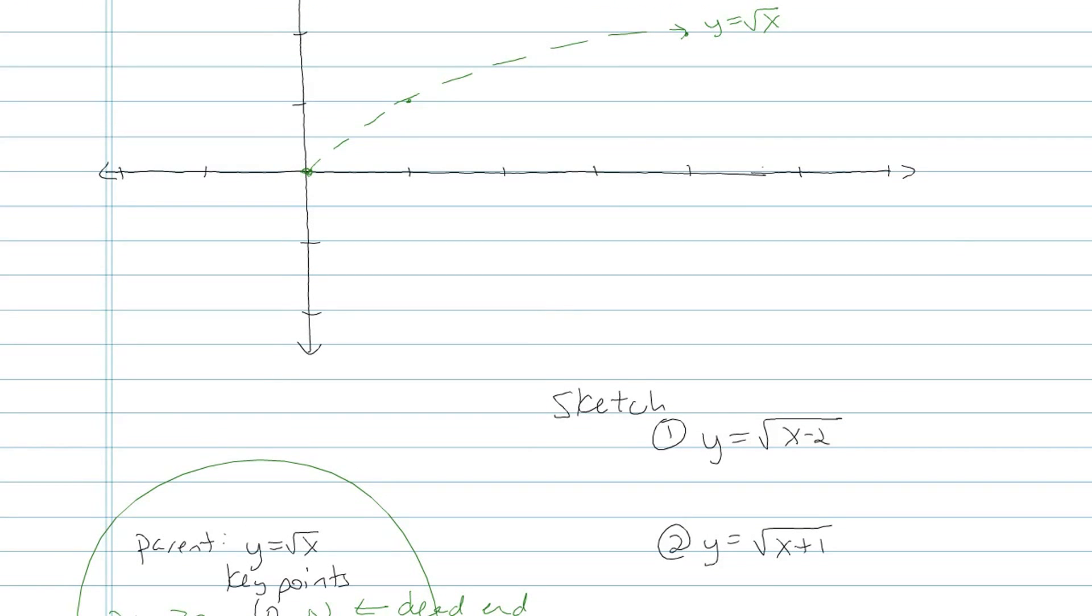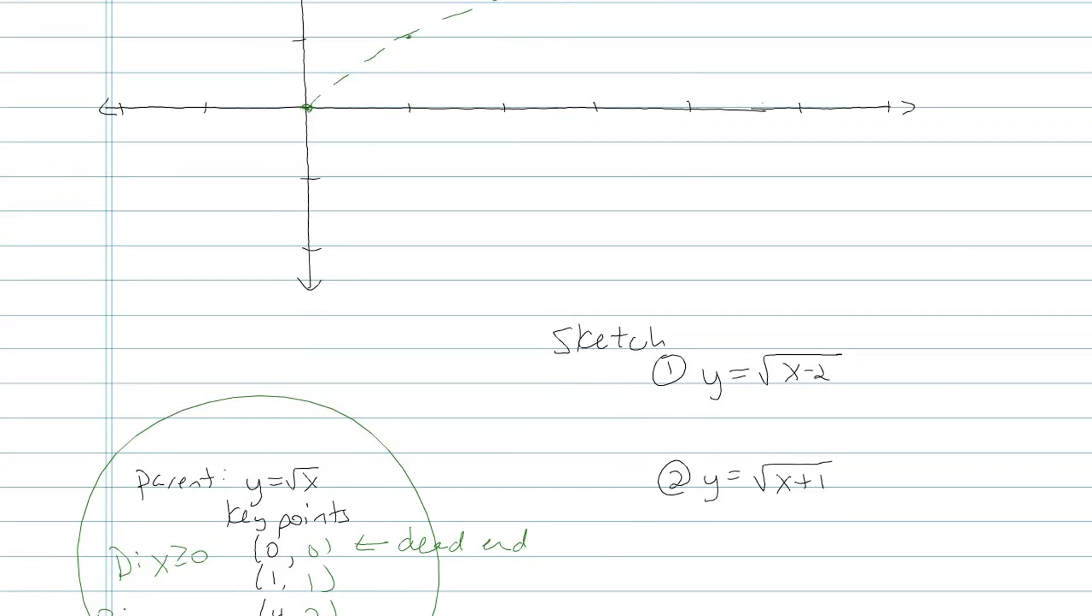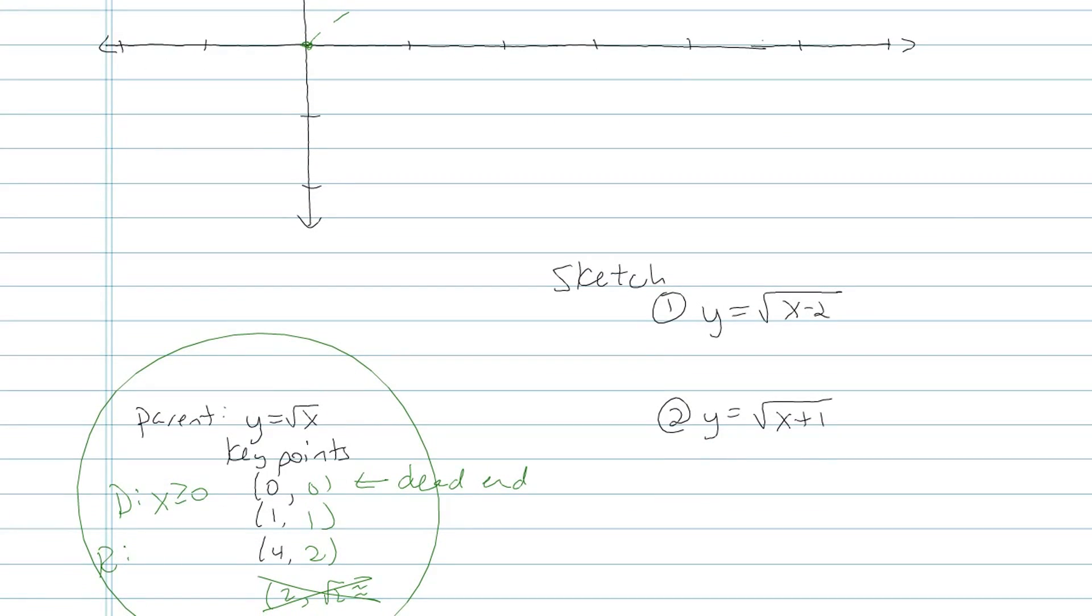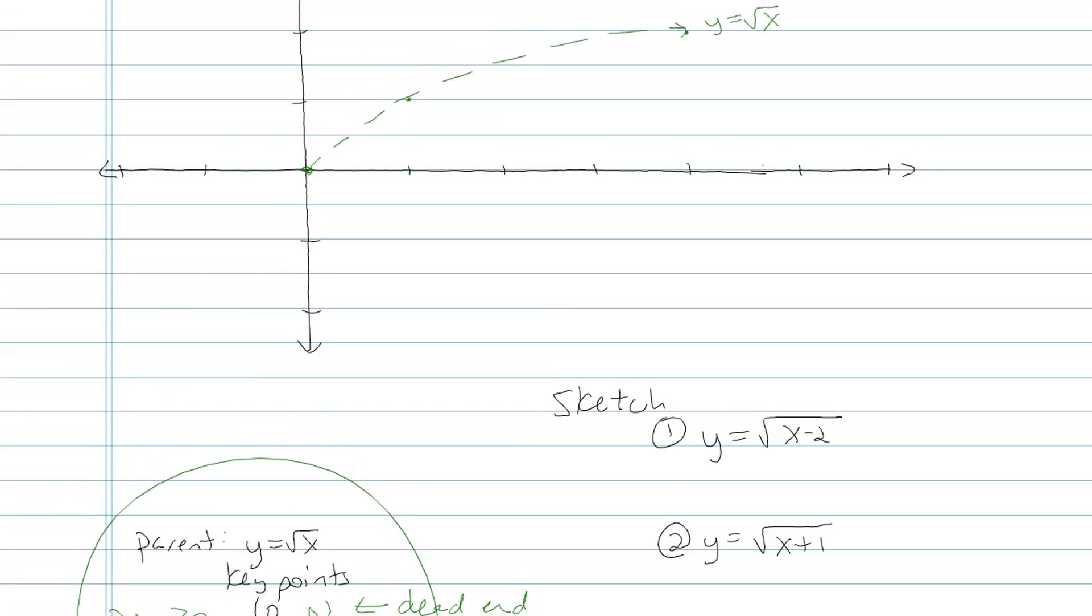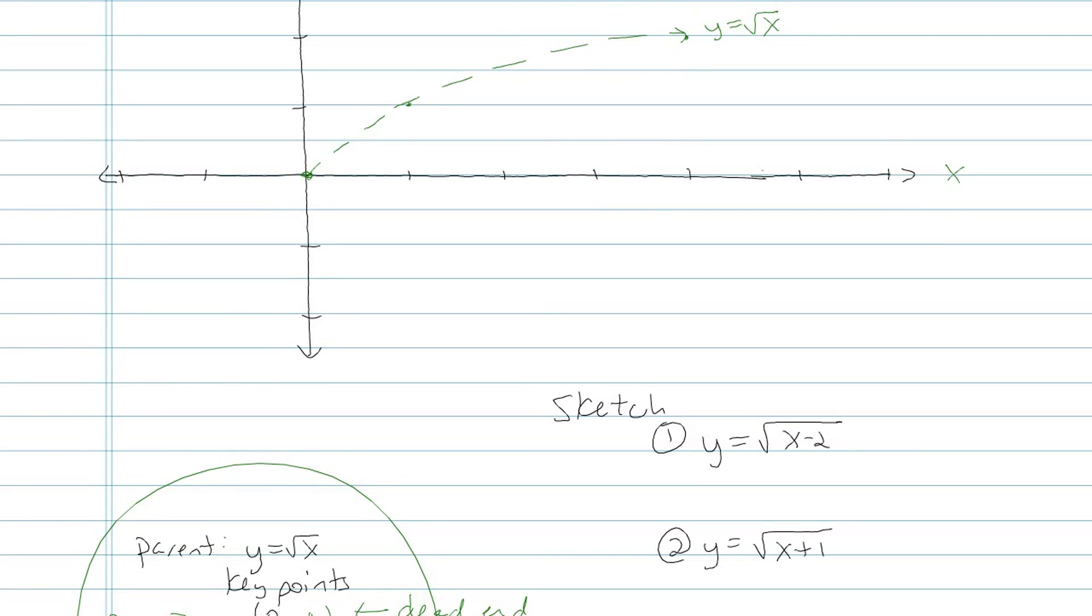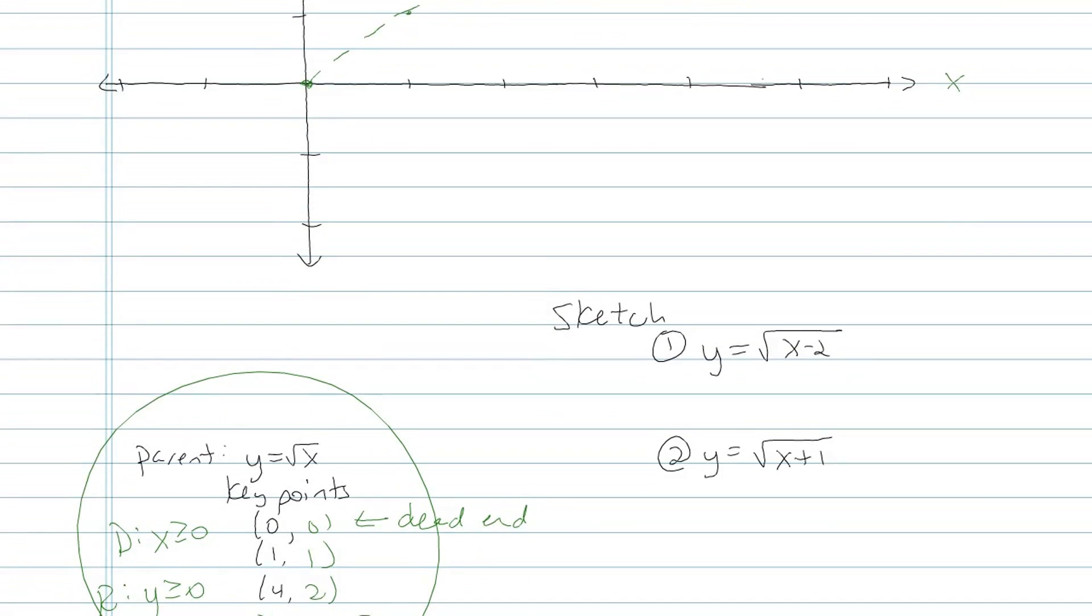While we're talking about domain, let's address the range as well. The range is the possible y values. And so if you look at my graph, my dashed line there, my curve never goes below the x axis. It never goes below that horizontal line. So my range, my output would be numbers that are greater than or equal to 0.